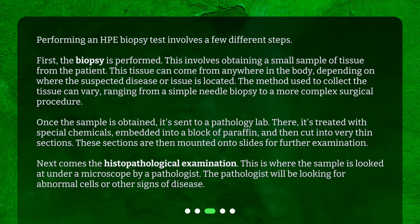Once the sample is obtained, it's sent to a pathology lab. There, it's treated with special chemicals, embedded into a block of paraffin, and then cut into very thin sections. These sections are then mounted onto slides for further examination. Next comes the histopathological examination. This is where the sample is looked at under a microscope by a pathologist, who will be looking for abnormal cells or other signs of disease.